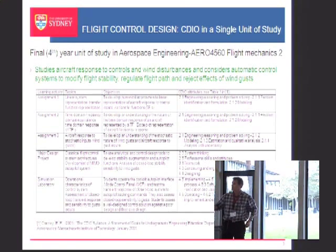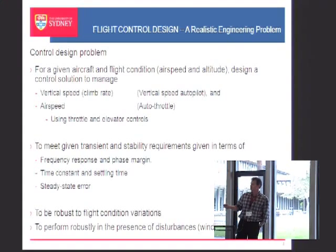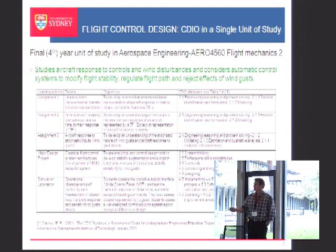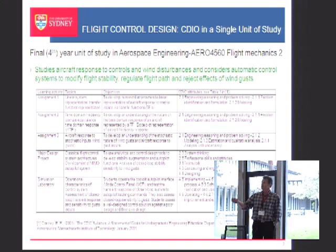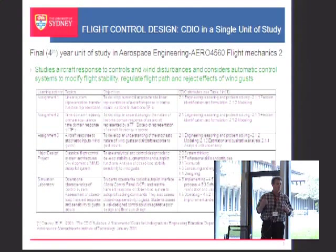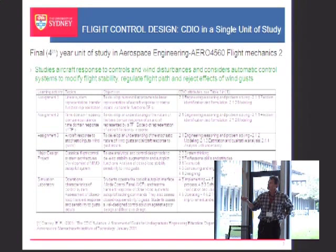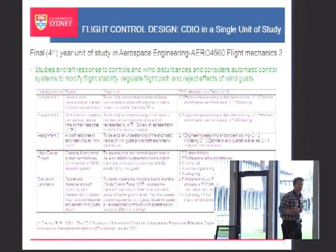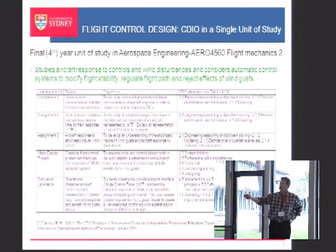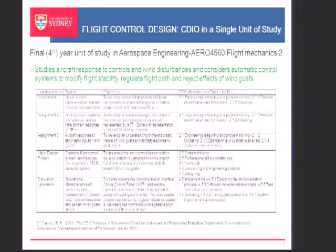This table addresses some of the CDIO goals and attributes in Ed Crawley's document. The structure of the course is that they do four assignments, starting with simple response to flight control inputs and looking at time domain and frequency domain issues, and also how they can analyse how an airplane responds to gusts, wind turbulence, and things like that. Because when they design their major design project — a flight control system — they are basically using those dynamic responses and making it reject the effects of gusts.